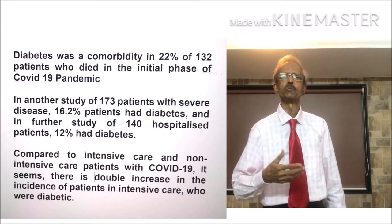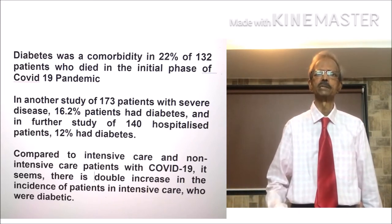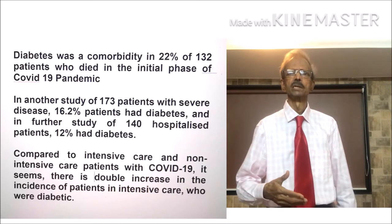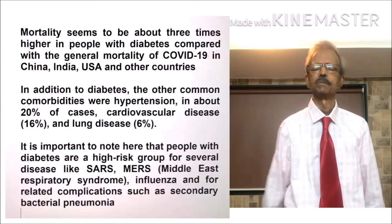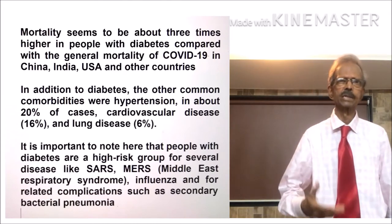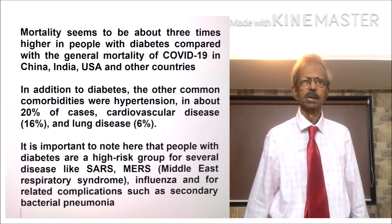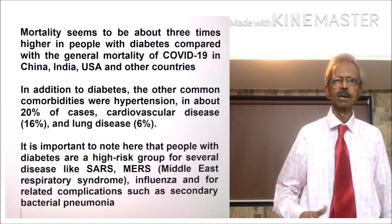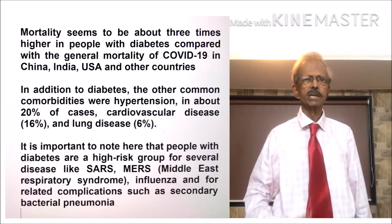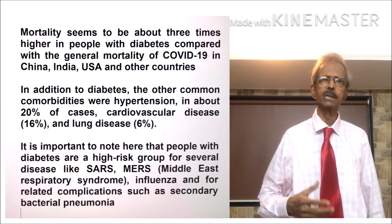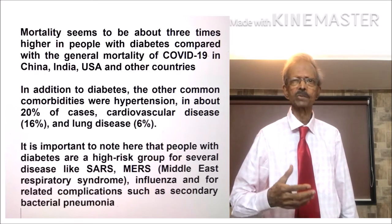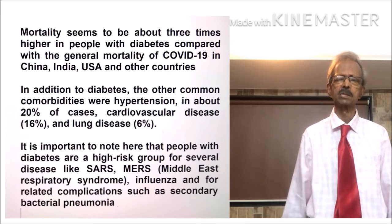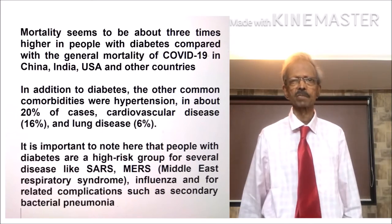Compared to non-intensive care patients with COVID-19, there seems to be a double increase in the incidence of diabetic patients in intensive care. Mortality seems to be about 3 times higher in people with diabetes compared with the general mortality of COVID-19 in China, India, USA and other countries. In addition to diabetes, the other common comorbidities were hypertension in about 20% of cases, cardiovascular diseases in about 16%, and lung diseases in about 6%.